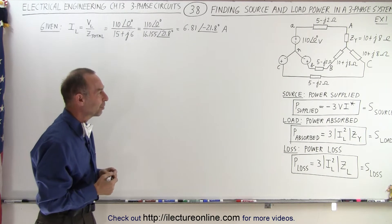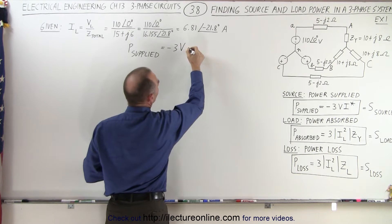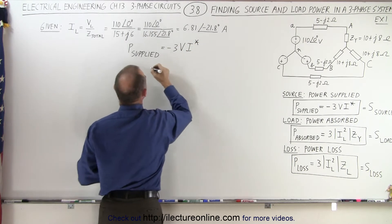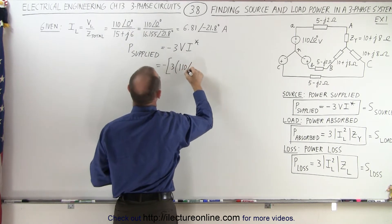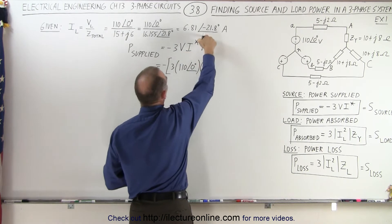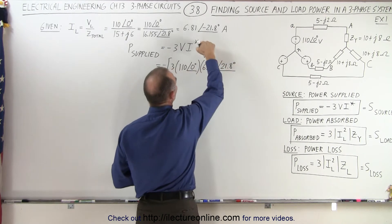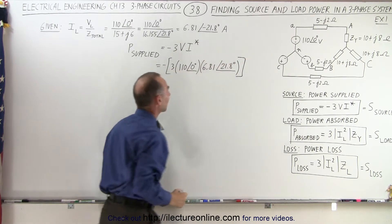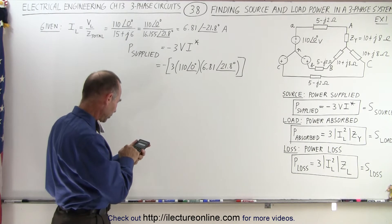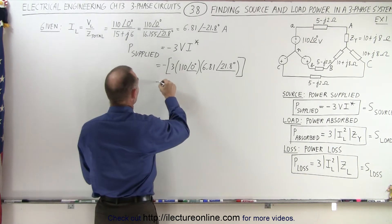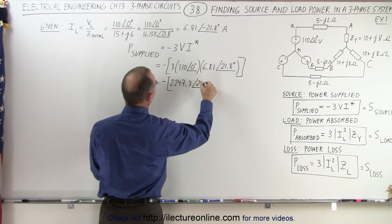So now let's calculate the power supplied. The power supplied is equal to minus three times the voltage times the complex conjugate of the current. That would be minus three times the voltage — 110 volts with a phase angle of zero degrees — multiplied by the complex conjugate of the current, which is 6.81 with a phase angle of positive 21.8 degrees, because the complex conjugate gives us a positive angle. So we have 330 times 6.81, giving us minus 2247.3 with a phase angle of 21.8 degrees.